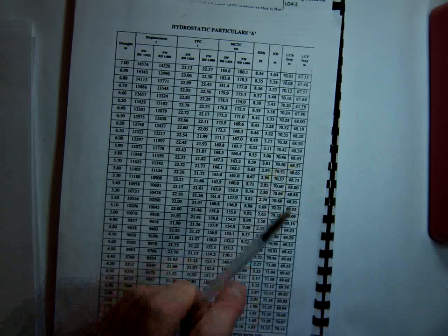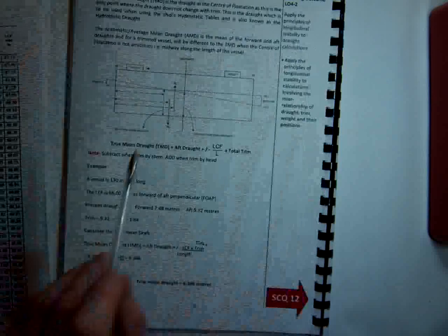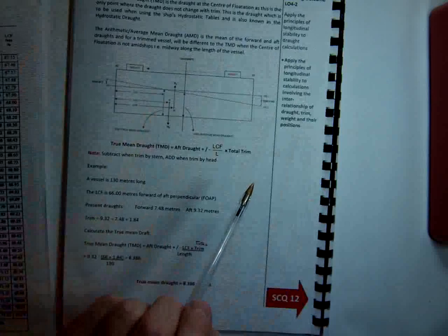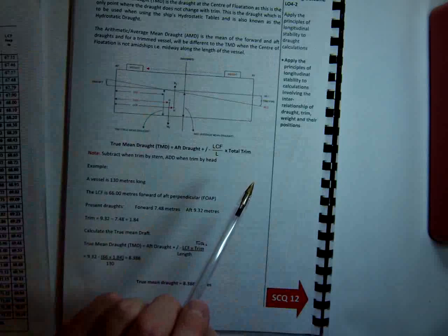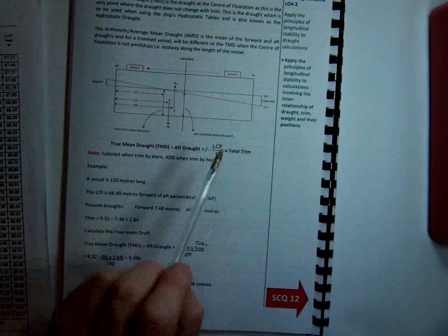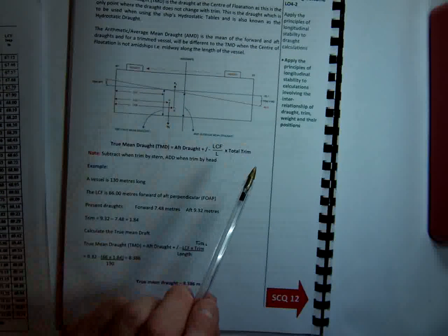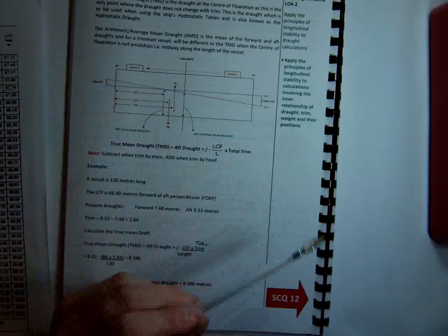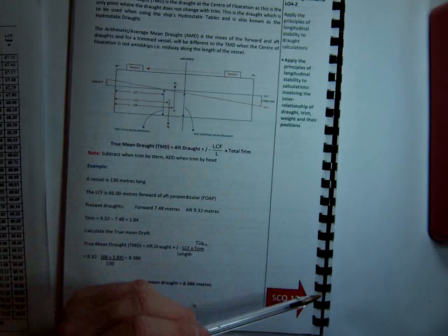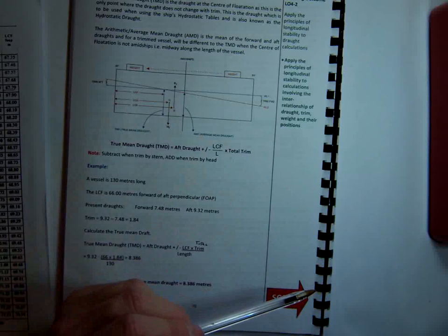Once we've got those four values, plus the LCG that we need to calculate, we can then put those into a formula to calculate the total trim. What we then do is apportion that trim forward and aft to get our final drafts forward and aft. So that's just a quick resume, really, on how we approach solving a longitudinal problem.